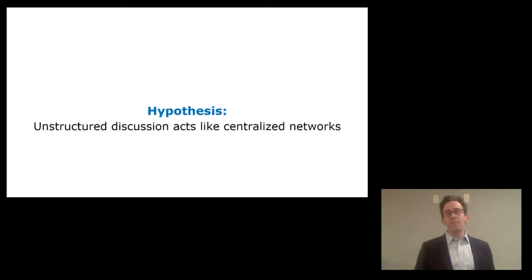We have this idea that just whenever you let people hang out in an unstructured discussion, they end up showing statistical properties that will be more like a centralized network than a decentralized network, even if the communication network is decentralized in the sense that everybody can observe everybody. They're all equally connected. So the question becomes, what does this mean if unstructured discussion acts like a centralized network?